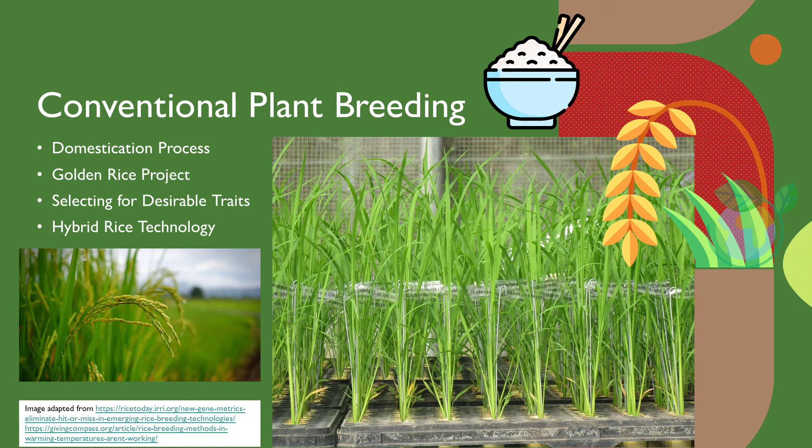An example is golden rice, a variety of rice scientifically known as Oryza sativa, which is produced through genetic engineering to biosynthesize beta-carotene, a precursor of vitamin A. Plant breeding came into being when farmers learned that crop plants could be artificially mated or cross-pollinated, rather than relying on insects or wind.